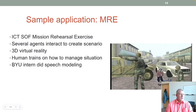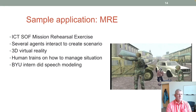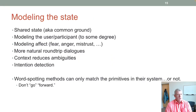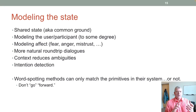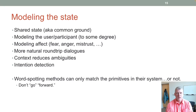A BYU student who was in this speech processing class did the speech modeling for this particular system. When modeling state, you have shared and common knowledge, and you want to model the user and their affect — fear, anger, mistrust — human emotions if you can. That creates a more natural round-trip dialogue between the human and the agent, and the context reduces ambiguity.